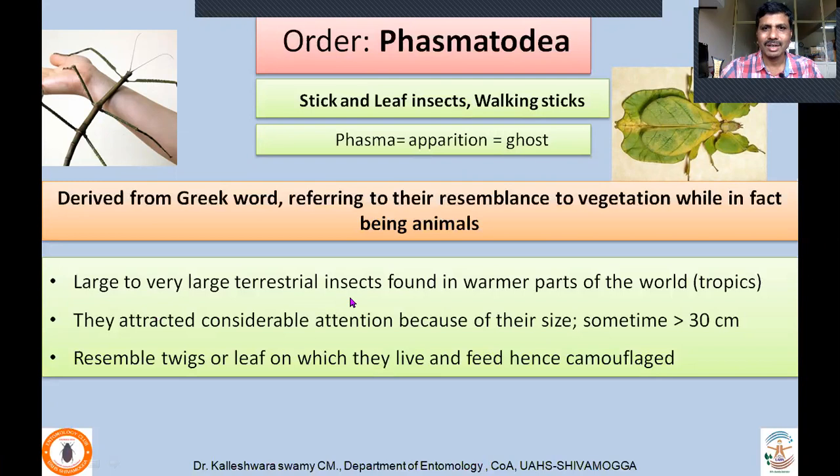Phasmatodea are large to very large terrestrial insects found in the warmer parts of the world, especially common in tropical regions. They have attracted considerable attention because of their size — comparatively bigger, sometimes more than 30 centimeters in length. They resemble twigs or leaves on which they live and feed. Usually they are camouflaged and are very difficult to notice and collect.